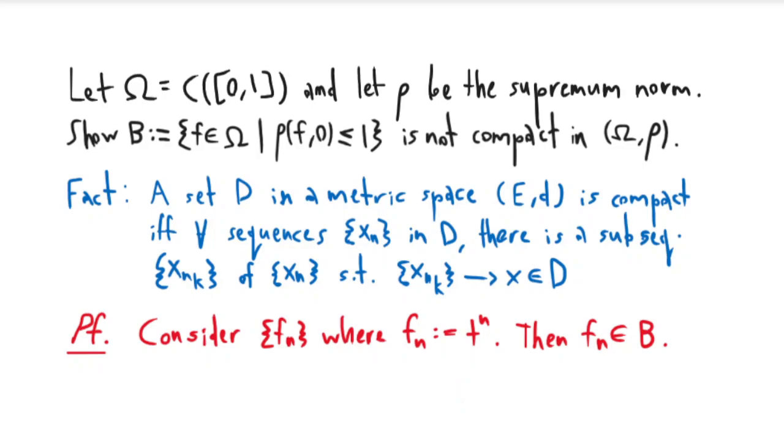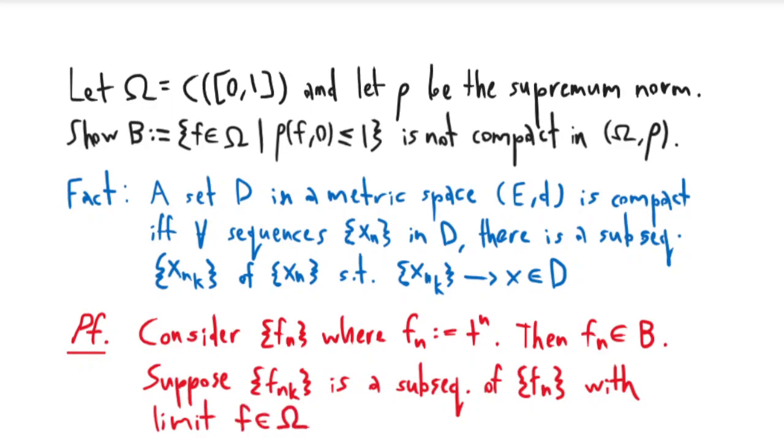I'm going to claim that no subsequence of fn converges. Suppose that f_{n_k} is a subsequence of fn with limit f in Ω.